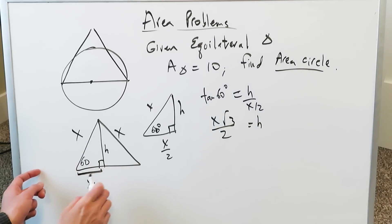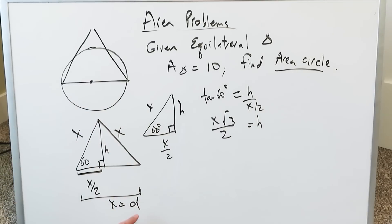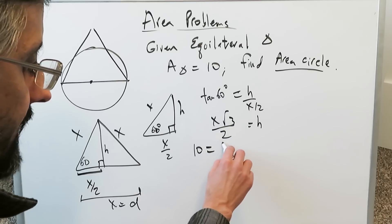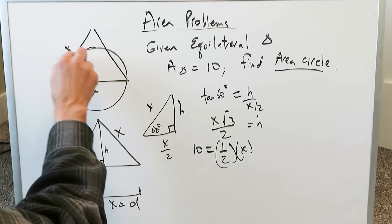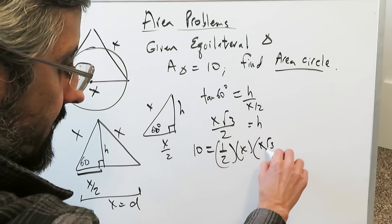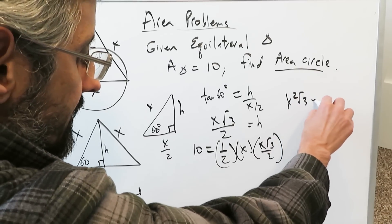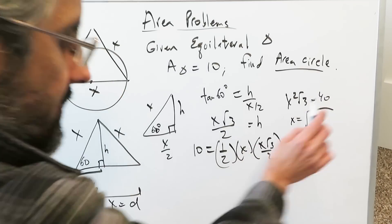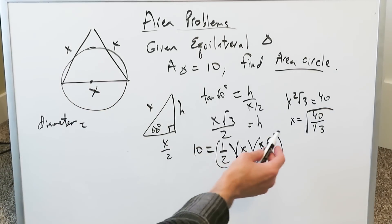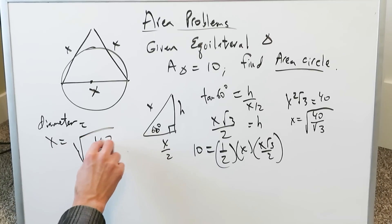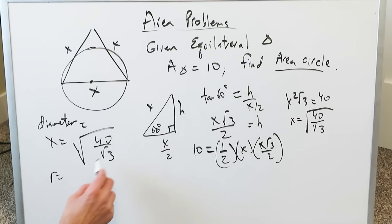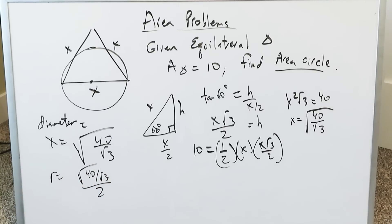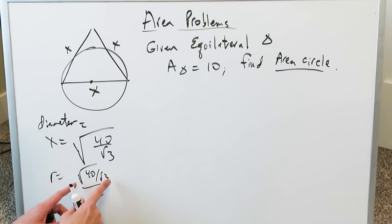I want to find x because x is also equal to the diameter of the circle. If I can determine the diameter, I can get the radius and then the area. The area of the triangle is ½ × base × height = 10, so: 10 = ½ · x · (√3x/2), giving x²√3 = 40, so x² = 40/√3. That represents the diameter squared. The radius is x/2, so r = √(40/√3) / 2.